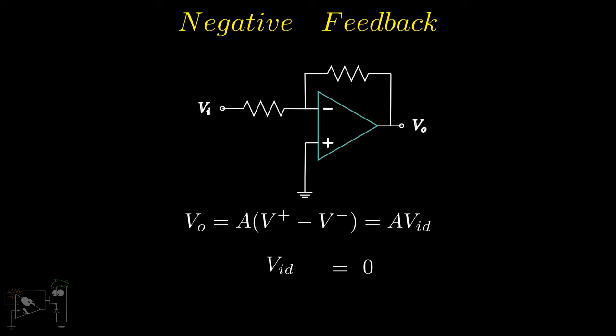So as Vid is tending to zero, the values of V plus and V minus must approach each other. This condition holds even if one of V plus or V minus is non-zero. In this case, we call it the virtual short concept. However, in essence they are the same and so we'll be using these terms interchangeably.